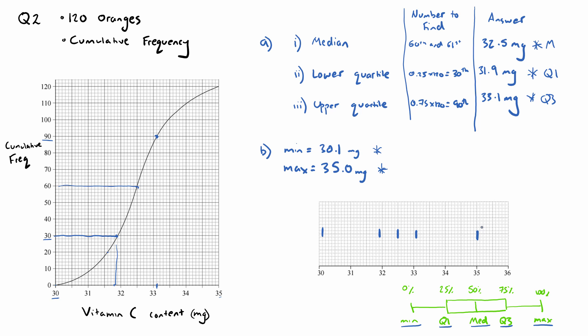And now that we have our five small vertical lines, we can then just draw a box between the second and fourth. And then we just connect up the min and the max. And there we have it, a very nice looking box and whisker plot, and that is the answer to Part B of Question 2.